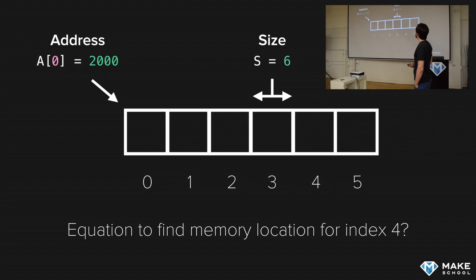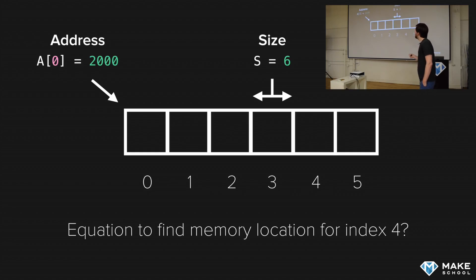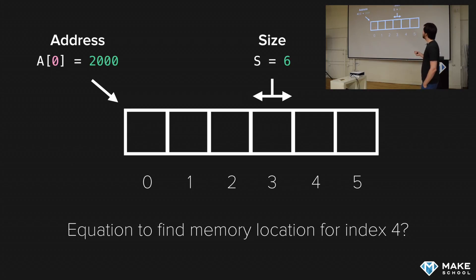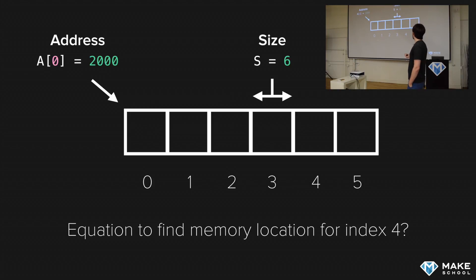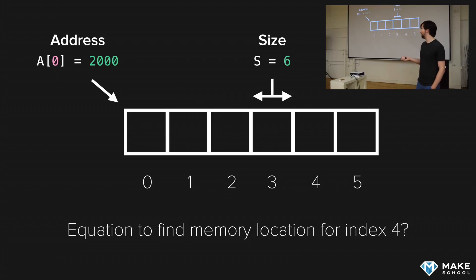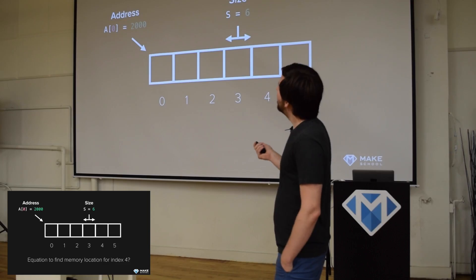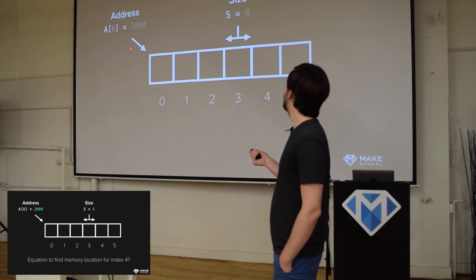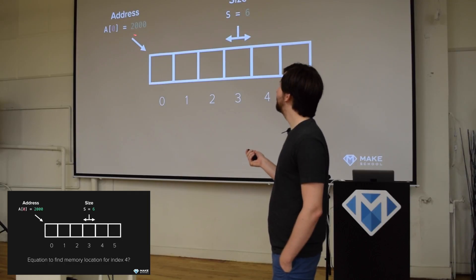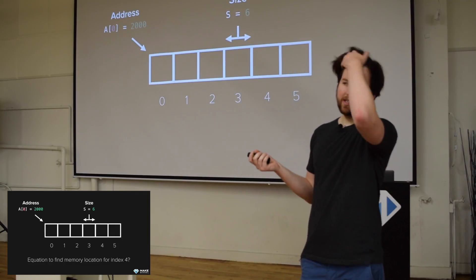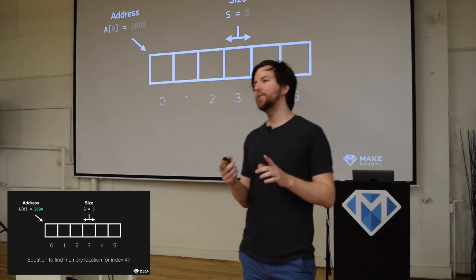Lists in Python are dynamic arrays of pointers to elements. This is what an array looks like in any C-like language — it's a contiguous piece of memory where each cell of memory is represented as a square. They have indexes; most languages are zero-indexed. So if we know that the address of index zero is some address like 2000, and we have six memory units allocated for each item in the array...